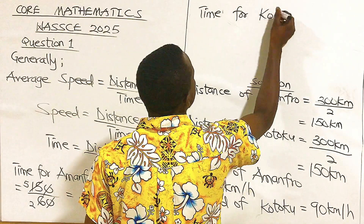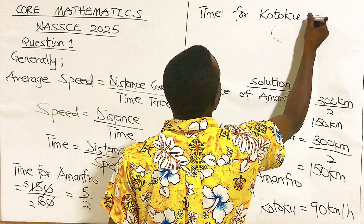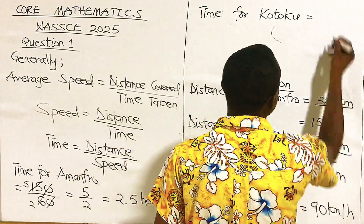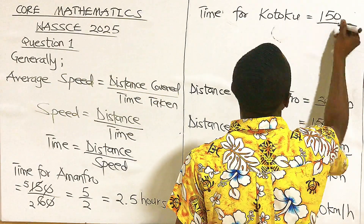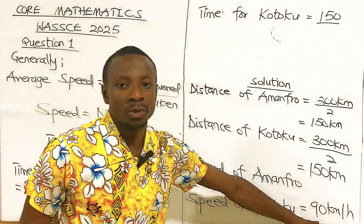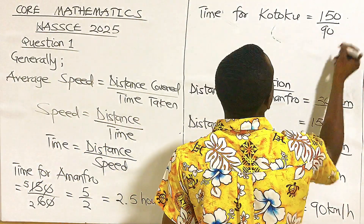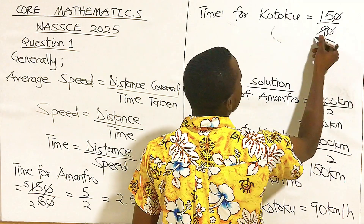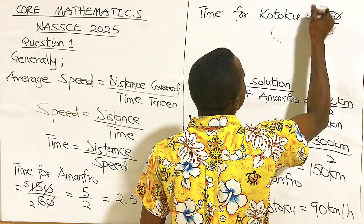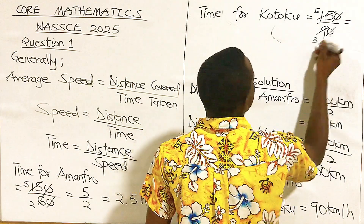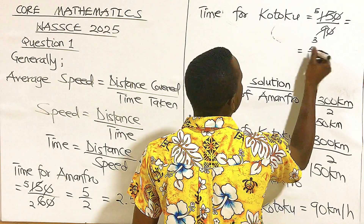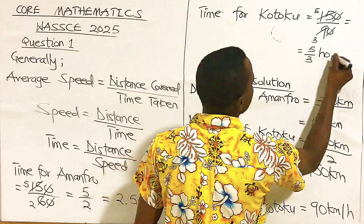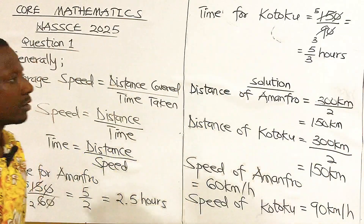Time for Kotoku: the distance for Kotoku is still 150 over the speed of Kotoku which is 90. Zeros cancel, 3 goes into 9 three times, 3 goes into 15 five times, and we are going to get 5 over 3 hours.